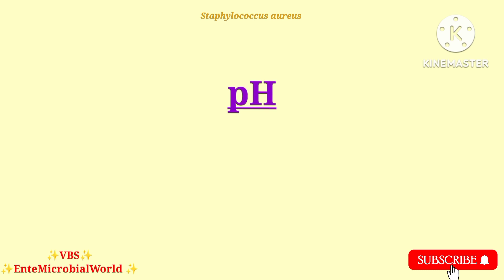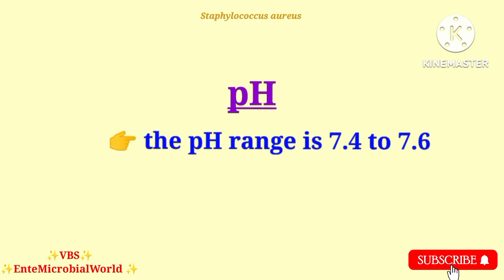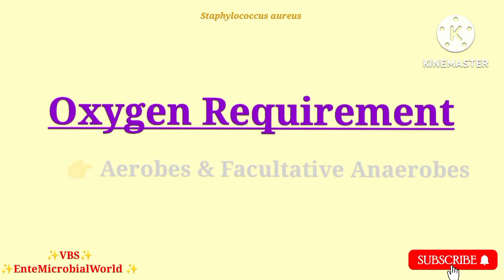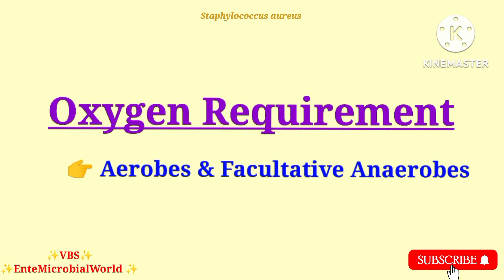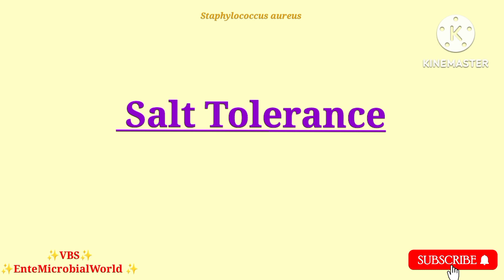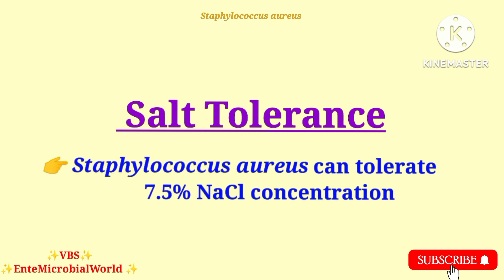pH: The pH range is 7.4 to 7.6. Oxygen requirement: They are aerobes and facultative anaerobes — that is, they can grow under conditions with or without oxygen.